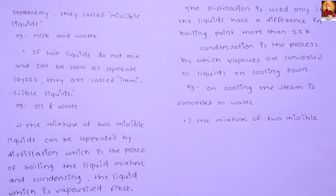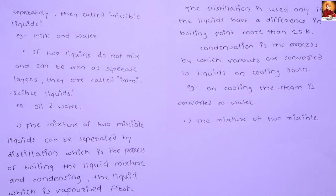The mixture of two miscible liquids can be separated by distillation, which is the process of boiling the liquid mixture and condensing the liquid which is vaporized first. The distillation method is used only if two liquids have different boiling points of more than 25 Kelvin apart.